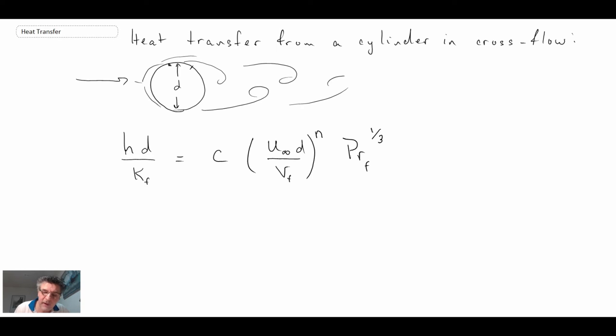So looking at this expression in this equation, what we see is we have these coefficients, C and N, and these would be obtained by conducting experiments. So what I'm going to do now is just write out the values, and we'll assume this here is RED evaluated at the film temperature.